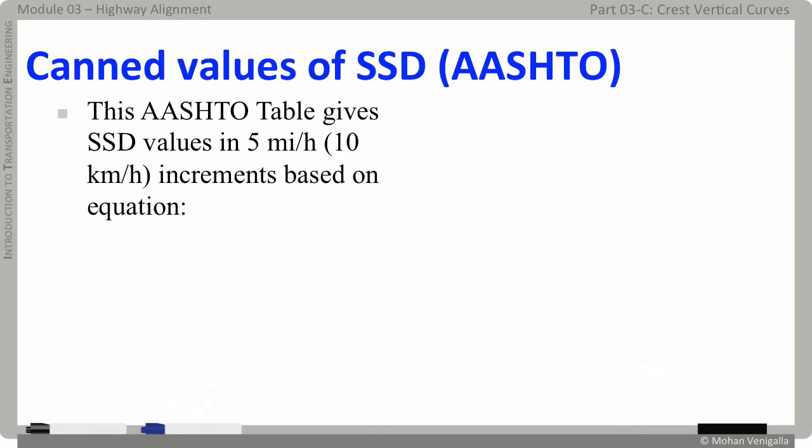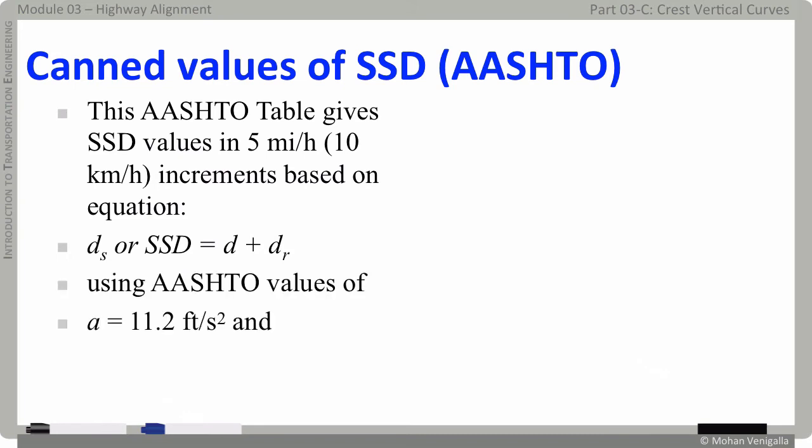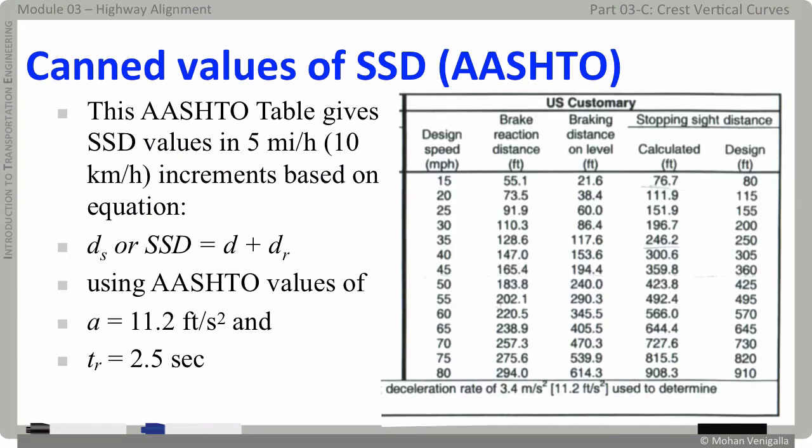For a given reaction time, speed and deceleration rate, we know how to compute the value of SSD using this equation. Using a standard deceleration rate of 11.2 feet per second squared and a reaction time of 2.5 seconds, values of SSD for various speeds are computed and are made available to us using lookup tables in AASHTO Green Book and those tables look like this. Remember, these SSD values are for grade equals zero, as if it were a flat road. By the way, we have other lookup tables in the Green Book for different values of grade. This is just for illustration purposes only.